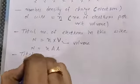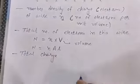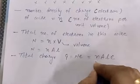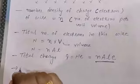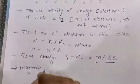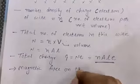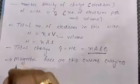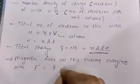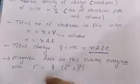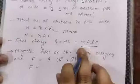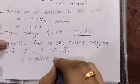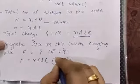So what is the total charge of this wire? According to quantization, Q equals N·e. So here total charge Q is N·A·L·e. Now we will find out the magnetic force on this current-carrying wire. F equals Q times V cross B. Here Q is the charge, that is N·A·L·e. In a conductor, the velocity of electron is written as Vd, and cross B — B is the magnetic field.